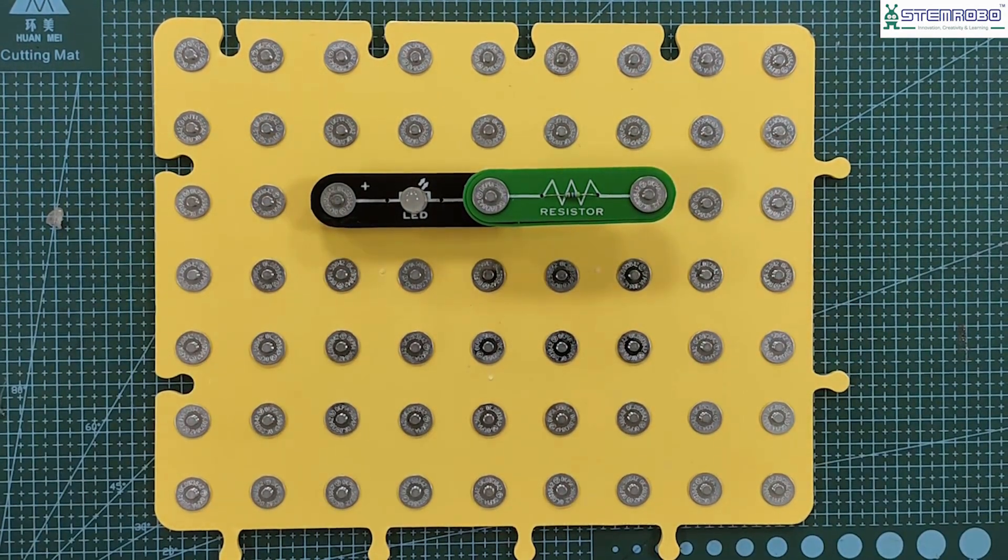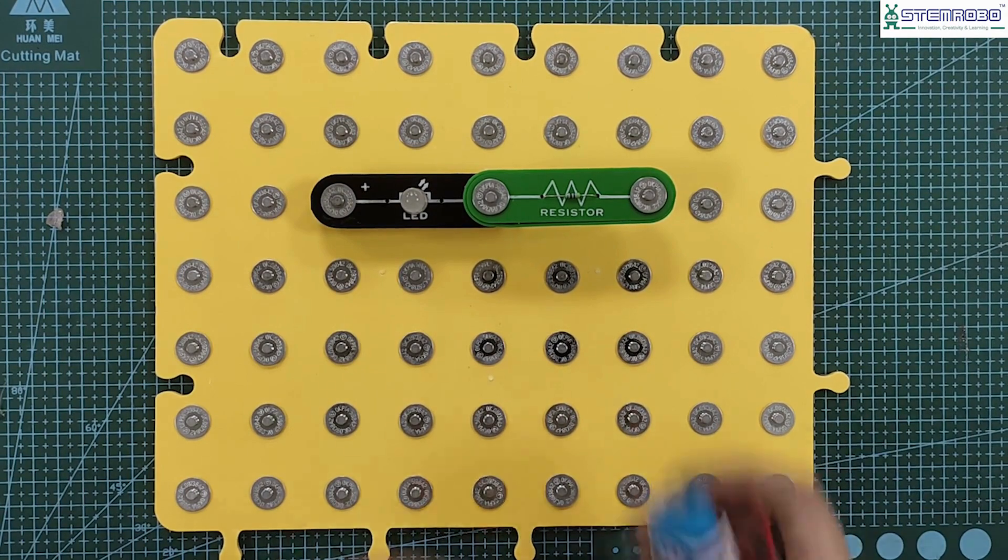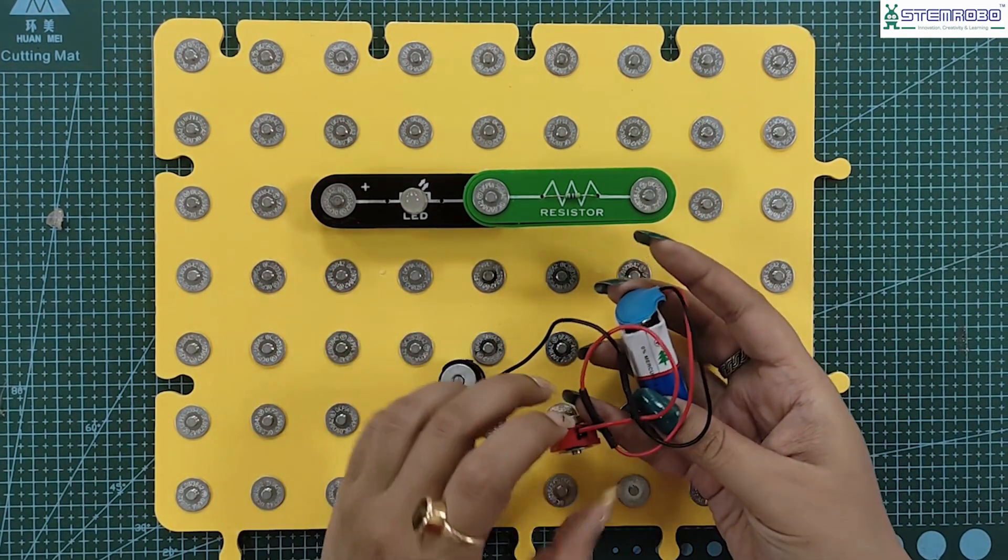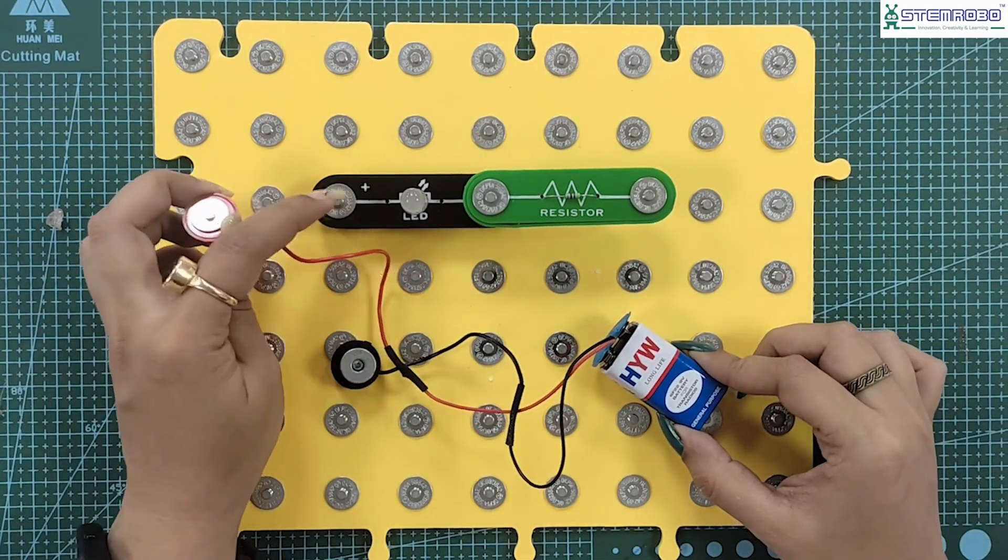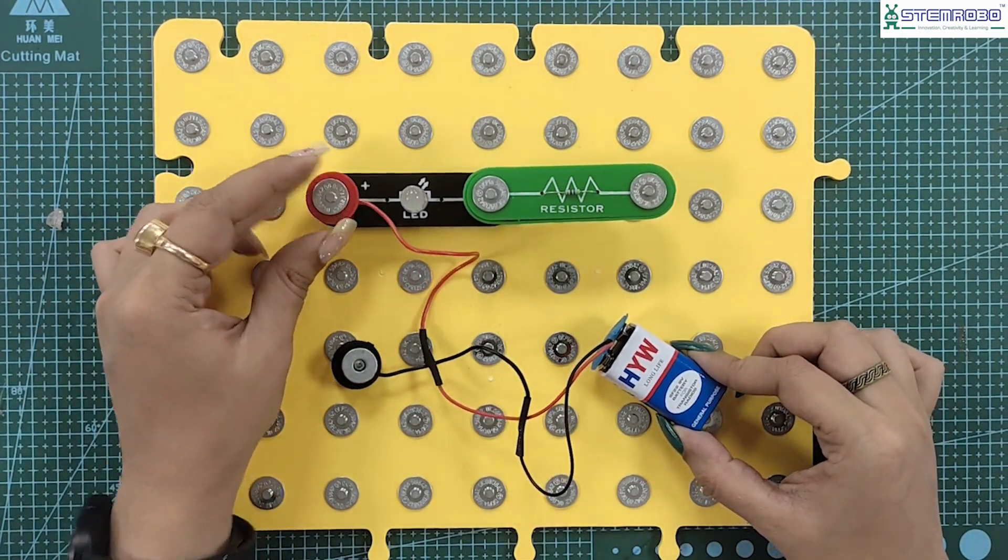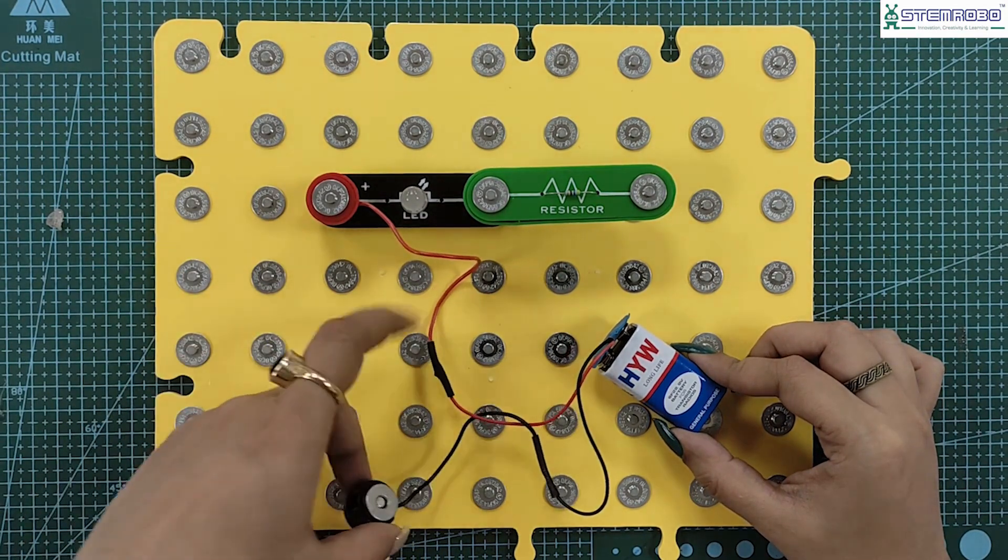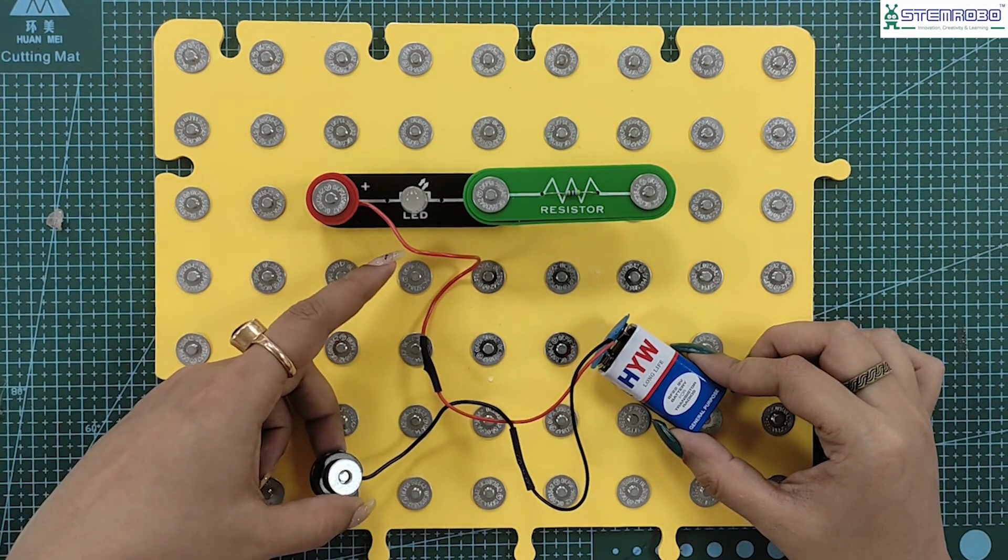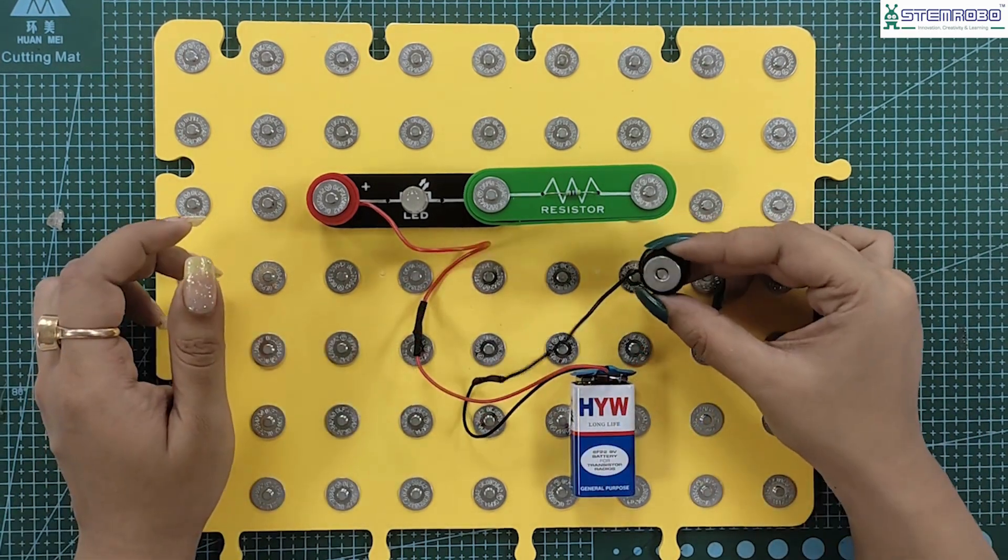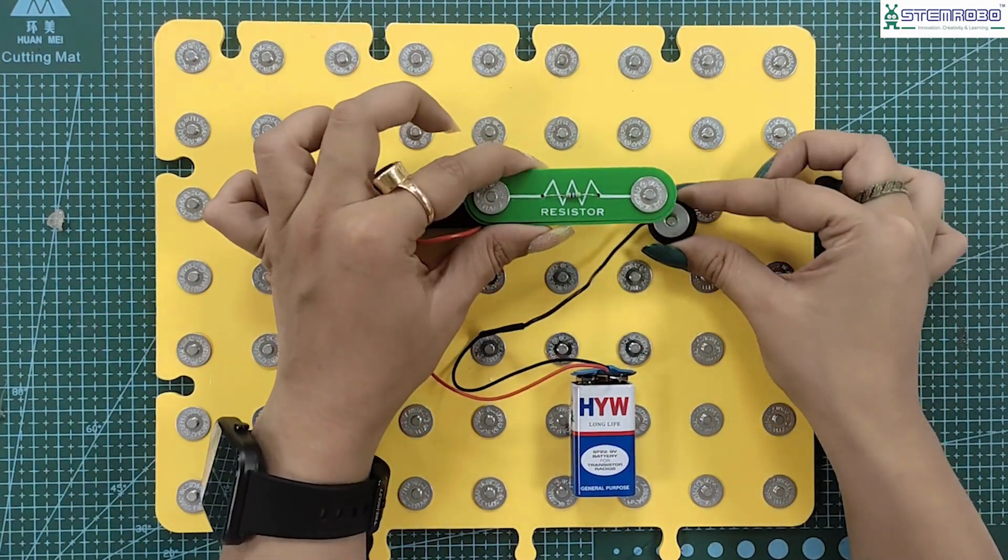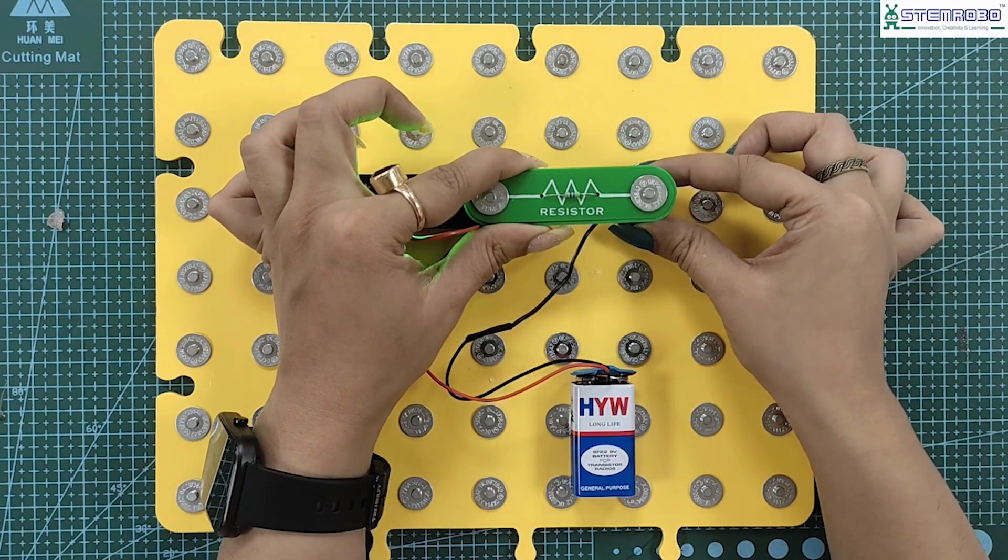Now to supply the power, I'll use the battery. The positive terminal of the battery will be attached to the positive terminal of the LED like this. You can see that the LED is not glowing because the circuit is not complete. So the negative terminal I'll attach it with the resistor at the bottom.